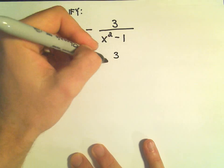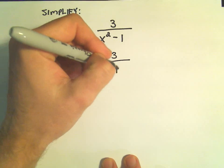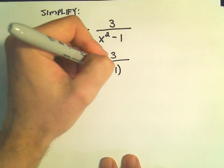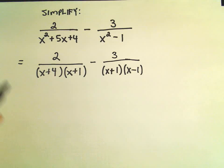And then we have 3 divided by, so x squared minus 1, that's just a difference of perfect squares. So that factors as, we'll make the first one x plus 1 and x minus 1.